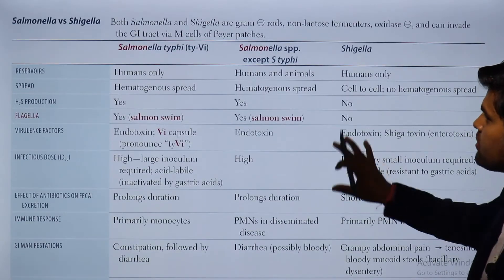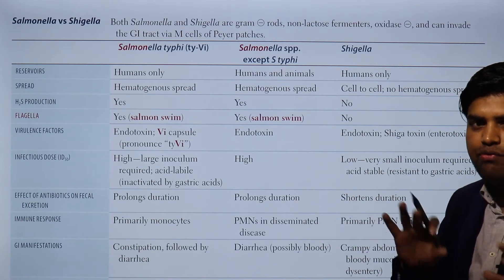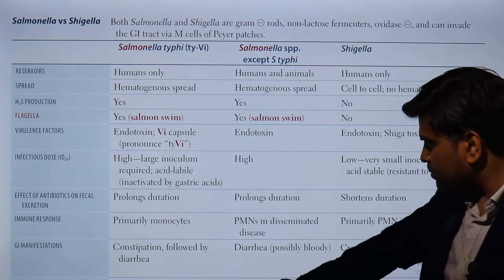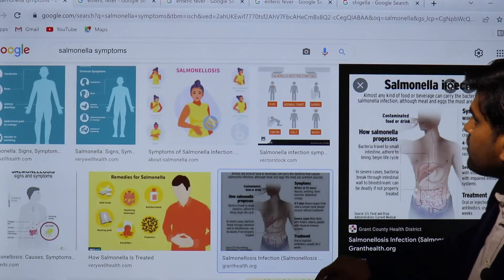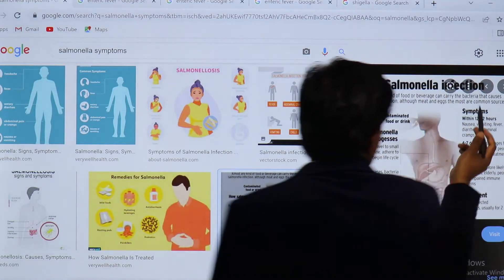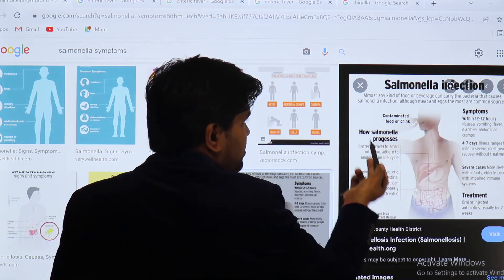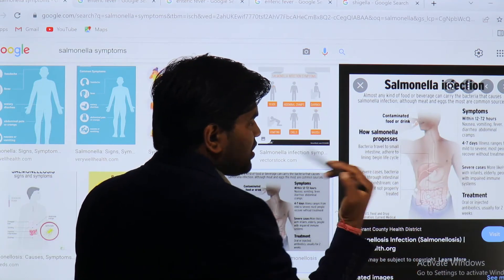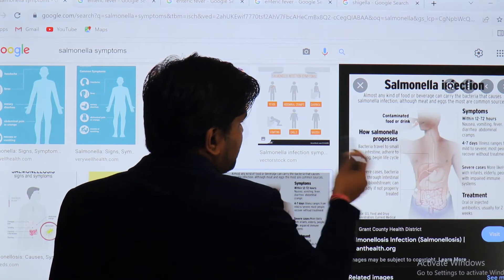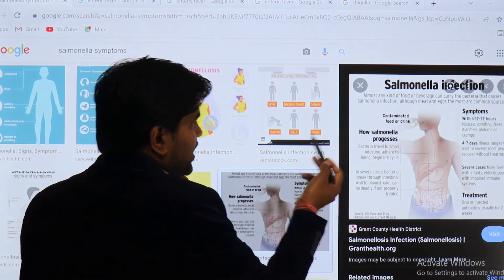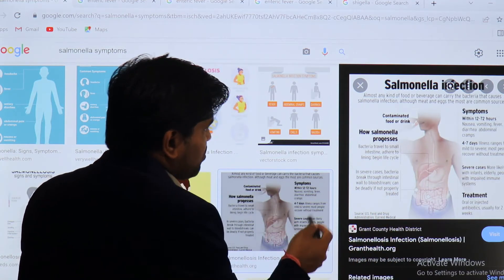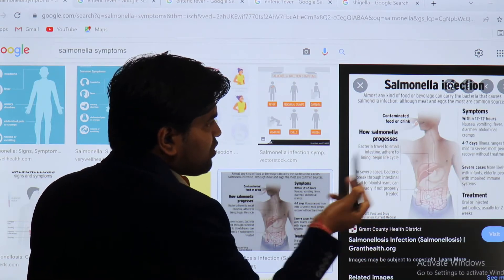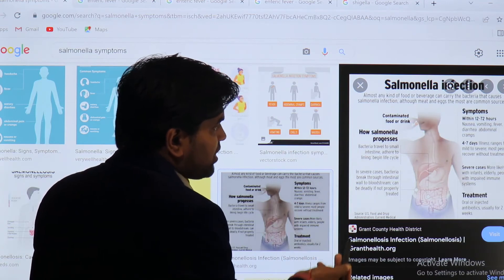These distinguishing features will likely form the basis of exam scenarios. Additional information: Salmonella infection can come from almost any food, but meat and eggs are the most common sources. Salmonella pathogenesis involves contaminated food or drink; bacteria travel to the small intestine, adhere to the lining, and in severe cases break through the intestinal wall into the bloodstream. Symptoms appear 12–72 hours later: nausea, vomiting, fever, diarrhea, abdominal cramps lasting 4–7 days.